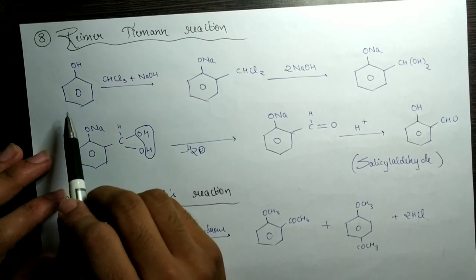The eleventh reaction is Etard's reaction — not so much important, but it may be asked for one mark. They'll give you the reaction and ask for the name, or give the name and ask you to write the reaction. We start with toluene and make it react with CrO₂Cl₂, called chromyl chloride — please remember this. The reagent uses CS₂ in the presence of an acidic medium with water, and finally we get benzaldehyde.